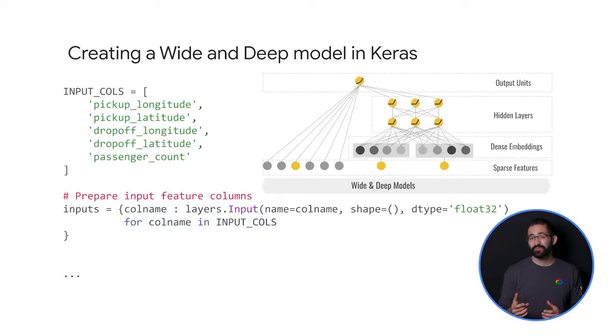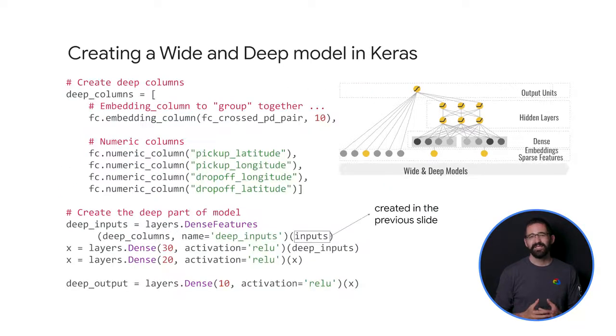These inputs will be fed to the wide and deep portions of the model. Using the inputs above, we can then create the deep portion of the model. layers.dense is a densely connected neural network layer. By stacking multiple layers, we can make it deep.